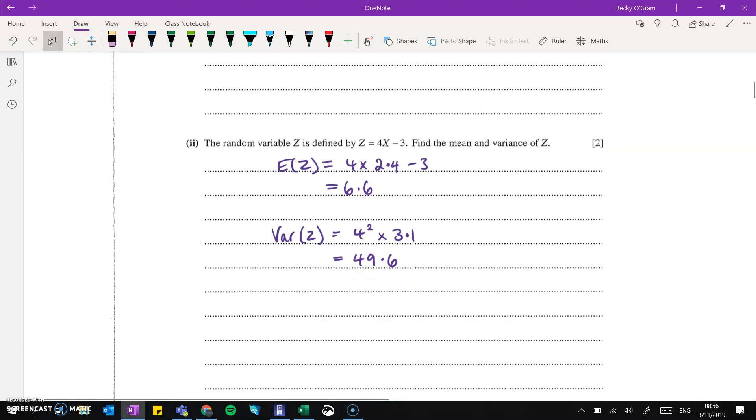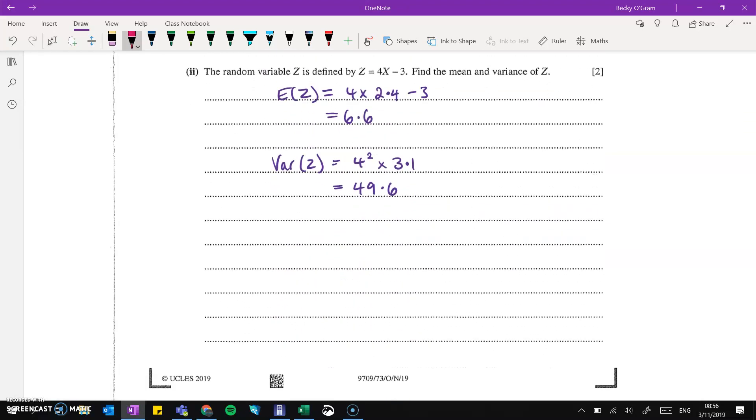Then part two is that z is 4x minus 3. This is different because we are doing x times 4, and then we're taking away 3. So the mean is the mean times 4 and then minus the 3. The variance is just the variance times by 4 squared. We don't have the take away 3 because adding or taking off a constant doesn't affect the variance. But because that x got multiplied by 4, the variance gets times by 4 squared.